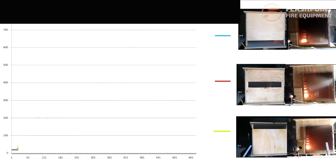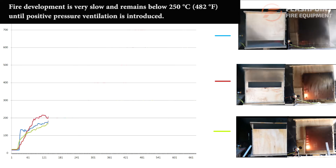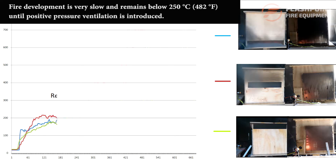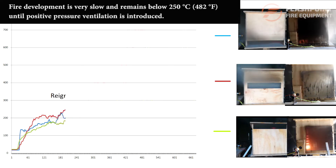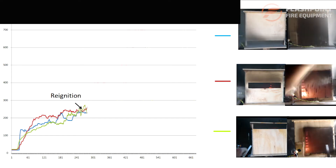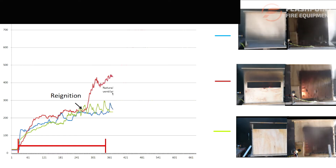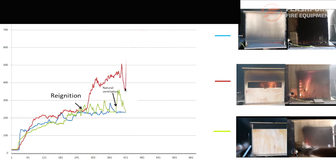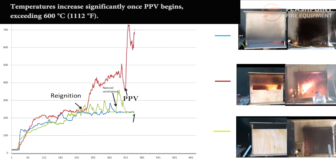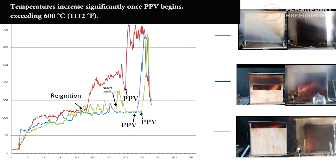With the opening positioned horizontally at various heights for comparison in the first series of burns, fire development is very slow and remains below 250 degrees Celsius until positive pressure ventilation is introduced. Temperatures increase significantly once PPV begins, exceeding 600 degrees Celsius, or 1112 degrees Fahrenheit.